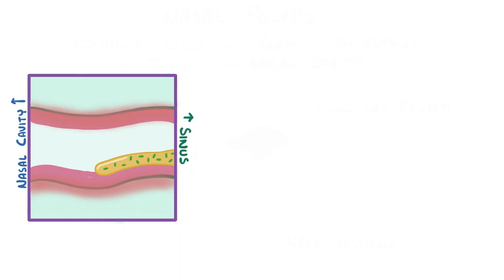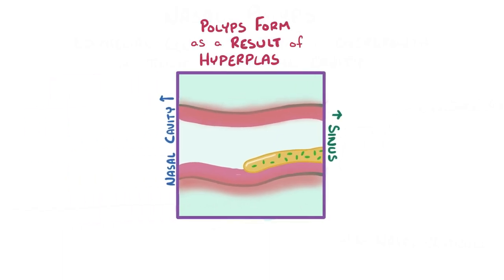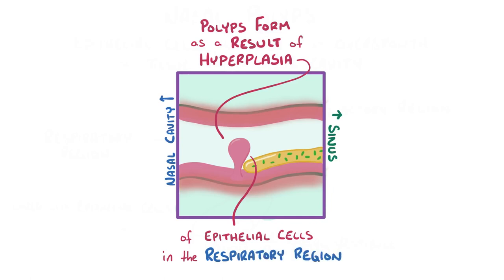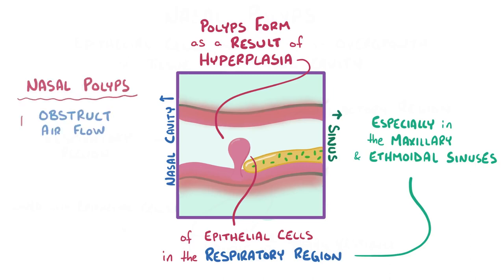As a quick recap: nasal polyps form as a result of hyperplasia of the epithelial cells that line the respiratory region, especially in the maxillary and ethmoidal sinuses. Their growth obstructs airflow through the nasal cavity and prevents sinus mucus from draining normally. They're treated with steroids or sometimes surgery, but have a high likelihood of coming back.